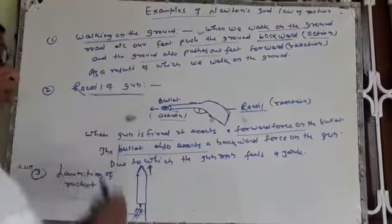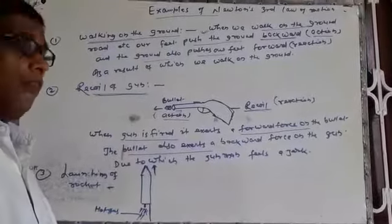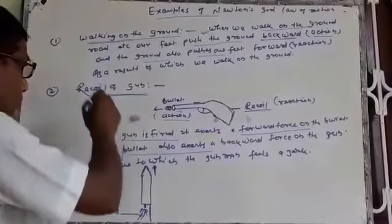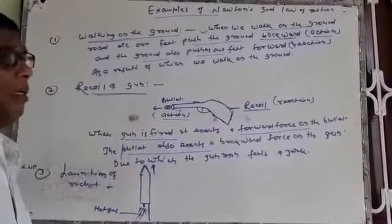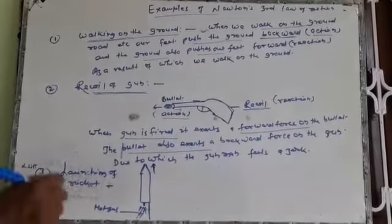There are questions like: why does gun recoil, why do we get a backward jerk when we fire a gun? Firing of gun and recoil of the gun is an example of Newton's third law of motion.